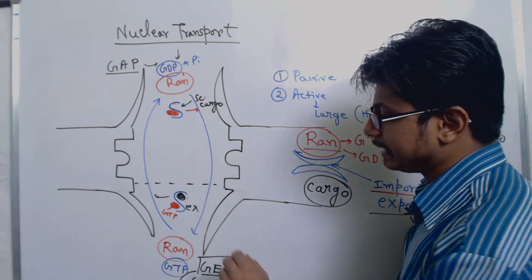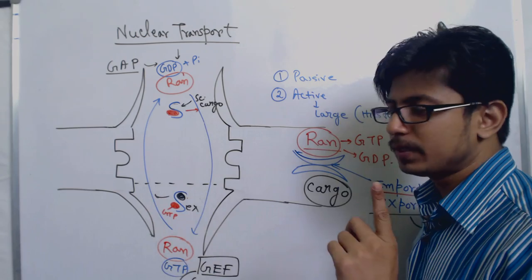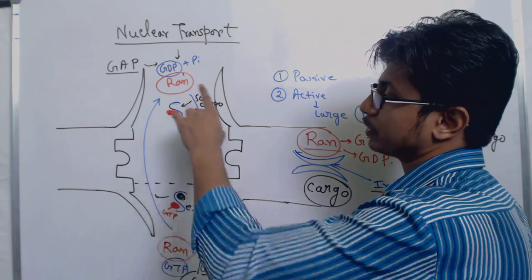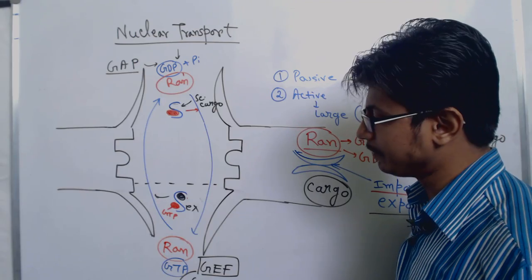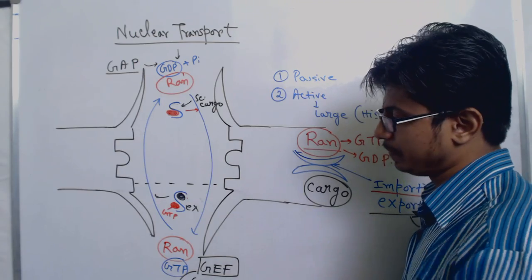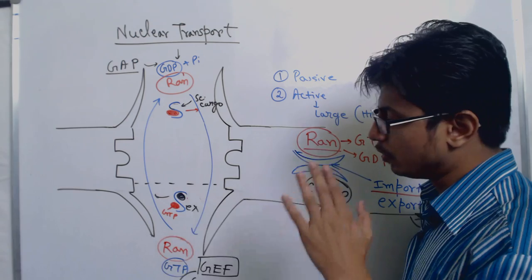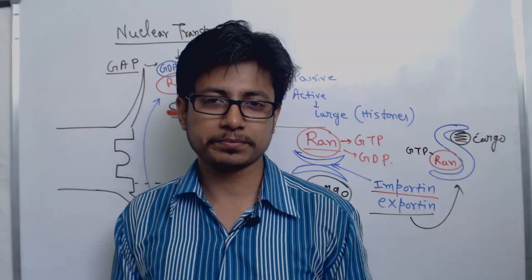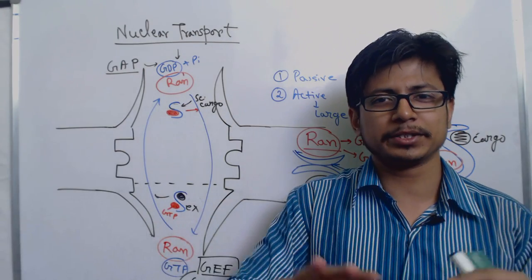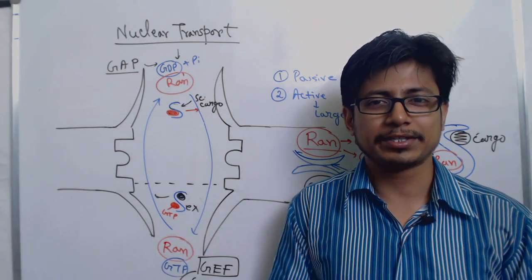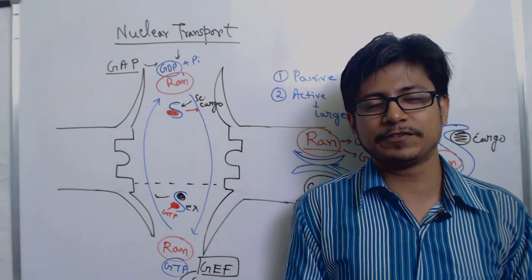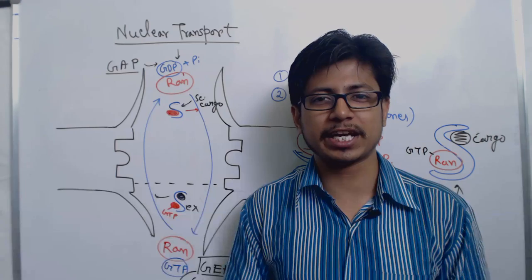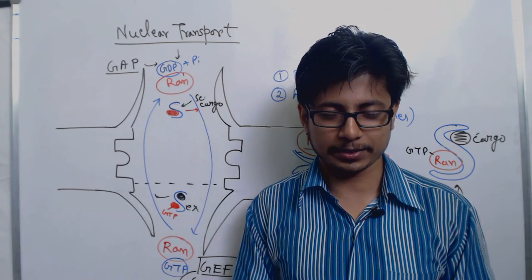Remember that RAN-GTP bound to the export receptor provides the signal to be transported out of the nucleus, while the same RAN-GTP bound to the import receptor causes cargo to be released and delivered inside the nucleus. That covers the overall idea of nuclear transport of proteins. If you like this video, please hit the like button, share it with your friends, and subscribe to the channel for more videos. Thank you.